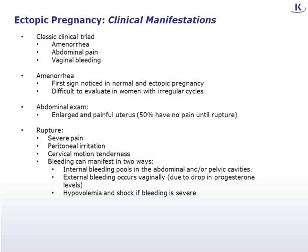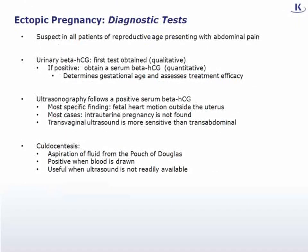It is important to clarify that it is not the cervix itself that is tender; rather, one or both of the fallopian tubes — when the examiner moves the cervix, the fallopian tubes are pulled and movement of the inflamed area results in pain. When ectopic pregnancy ruptures, bleeding can manifest in two ways: internal bleeding may pool in the abdominal and/or pelvic cavities, and external bleeding occurs vaginally due to a drop in progesterone levels. If bleeding is significant, it can lead to hypovolemia and shock.